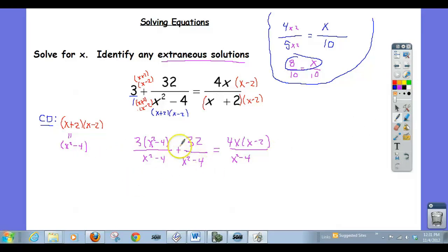I'm going to add these fractions so that I only have one fraction on the left. And they have a common denominator, so I can do that. When you add those together, you get 3 times x squared minus 4 plus 32 all over x squared minus 4.